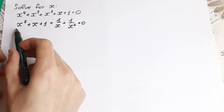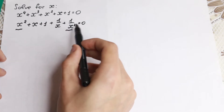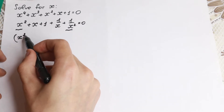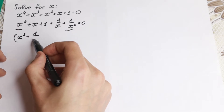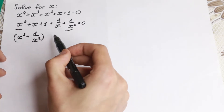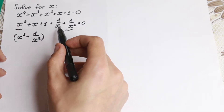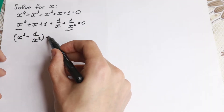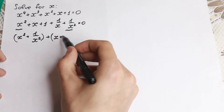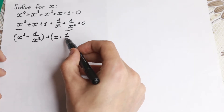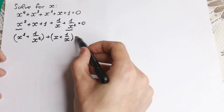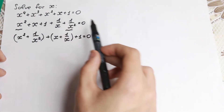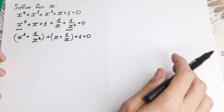Now let's regroup the terms. We group x² with 1/x², and we group x with 1/x, giving us: (x² + 1/x²) plus (x + 1/x) plus 1 equal to 0. We can do this because all operations are addition.